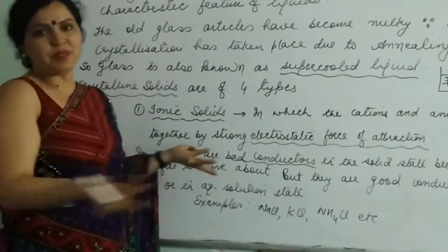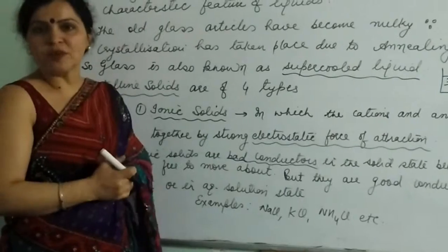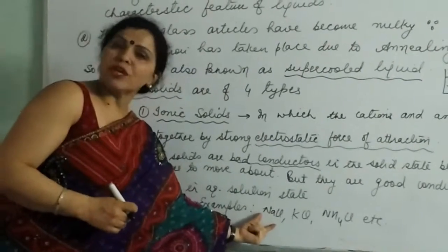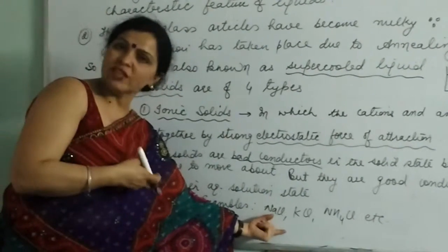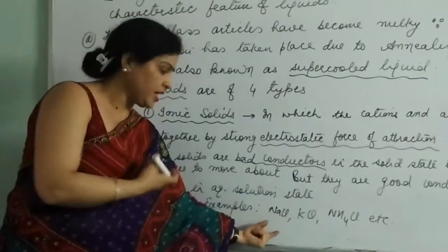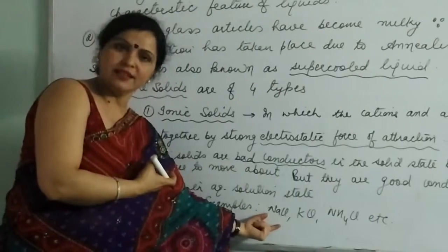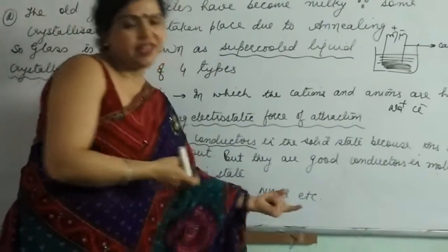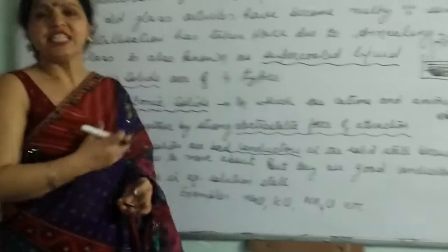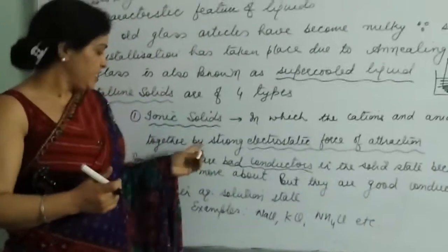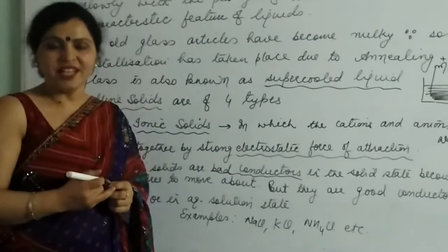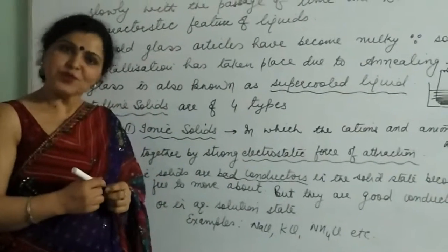The examples are very common and simple — these are plus or minus charged species. Like NaCl, KCl, ammonium chloride, etc. These are the ionic solids. And we will continue.